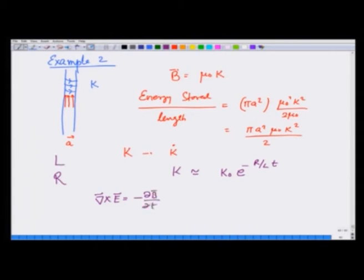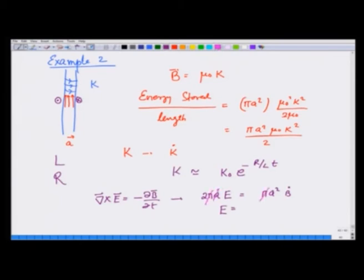The induced electric field goes in on the right side of the solenoid and comes out on the left side. Using Stokes' theorem: 2πa · E = πa² · |Ḃ|, with the sign already accounted for by direction. Canceling π and one factor of a, E = aḂ/2 = (aμ₀/2)k̇. Right at the surface — and just inside, since the parallel component of E is always continuous — this is the electric field going in.